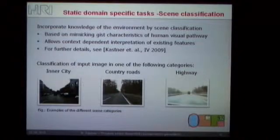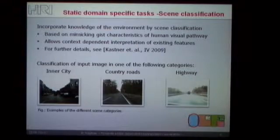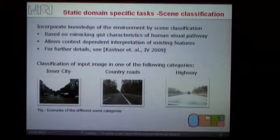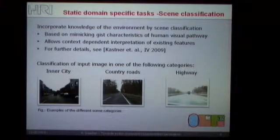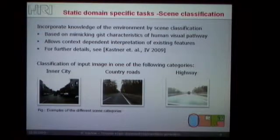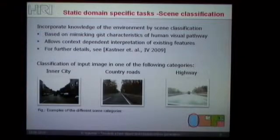Coming now to the first part — the static domain-specific tasks — here we go for an algorithm for scene classification. The idea is that based just on a camera image, you are able to specify a global characteristic of the scene, and then use this for a task- or context-dependent interpretation of your current algorithms. So you are able to use different algorithms in different scenarios or scene categories, or also parameterize your algorithms differently.